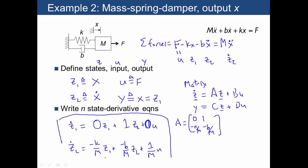And then the second row is just going to be negative k over m and negative b over m. This is because this vector, I should note, this vector z dot would be the same as z1 dot and z2 dot.